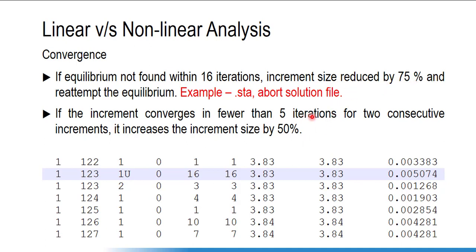The solution does not always reduce the increment size. Sometimes it increases the increment value. If two subsequent increments converge within five iterations, the software will increase the increment by 50 percent. You can see here those increments converge within the third and fourth iterations, so the software increases the increment time by 50%.